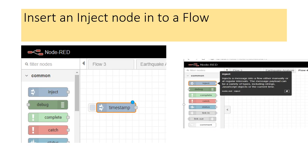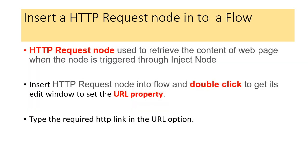As usual, we need to insert an inject node into the flow — select it and place it in the workspace. Now we are going to insert an HTTP request node into the flow. This HTTP request node is used to retrieve the content of a web page when the node is triggered through the inject node. When you click the blue button of the inject node, it will trigger the data fetch from the specified website.